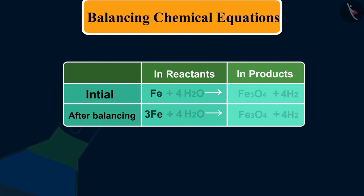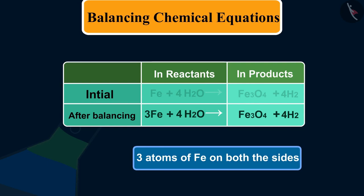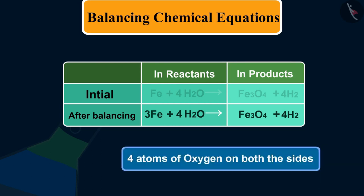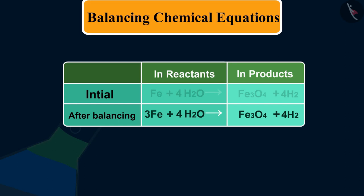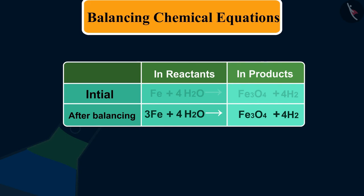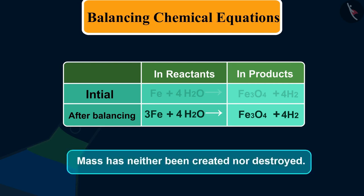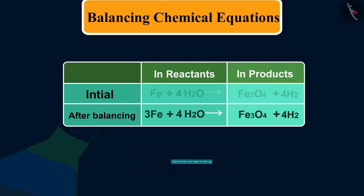Finally, let us examine this balanced equation. There are 3 atoms of iron (Fe), 8 atoms of hydrogen (H), and 4 atoms of oxygen (O) on both sides. Now the number of atoms of elements on both sides of the equation are equal, so this equation is balanced. That is, mass has neither been created nor destroyed. Therefore, the number of atoms of each element is equal before and after the reaction.